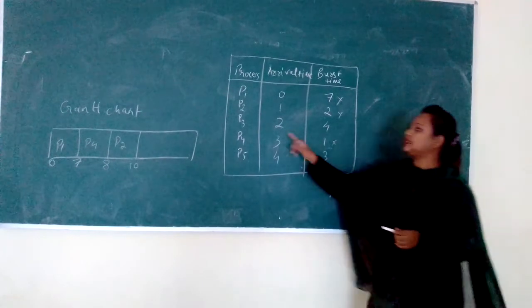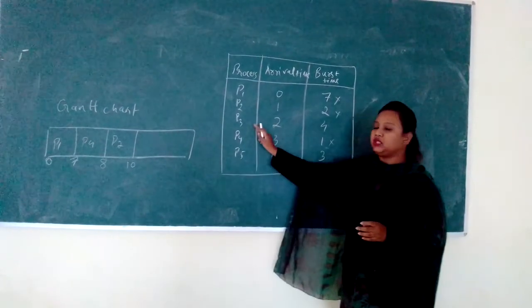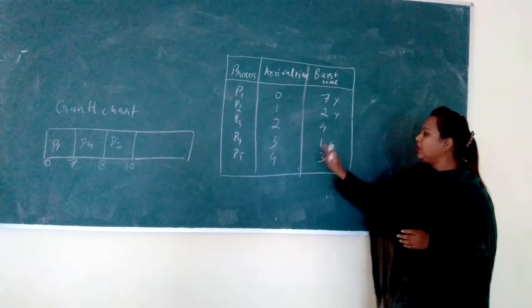Remaining processes are P3 and P5. CPU will see P3 that is 4 and P5.